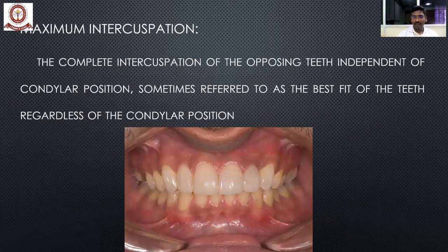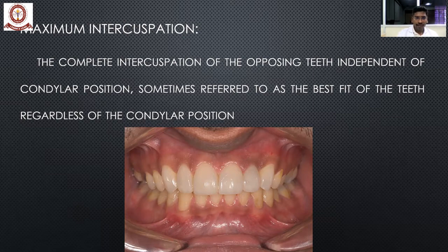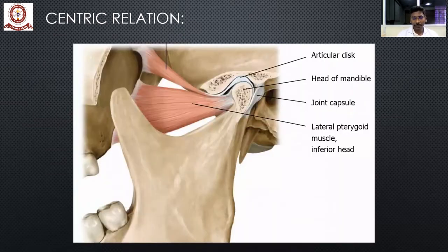Maximum intercuspation, as the name implies, is the relationship between maxilla and mandible when the teeth are in maximum contact. When you clench the teeth tightly, the relationship which exists between the maxilla and mandible at that point is called maximum intercuspation.